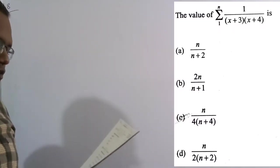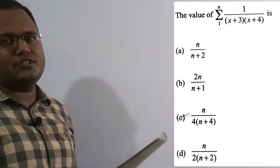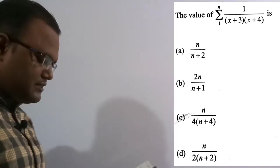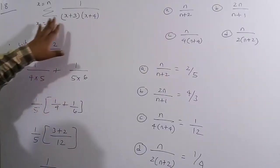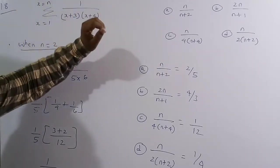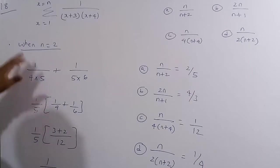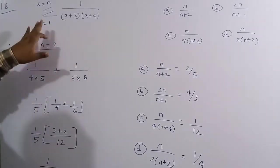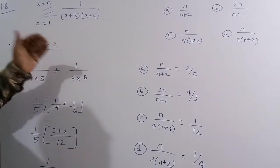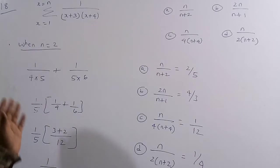Now solving the 18th question: find the value of Σ(x=1 to n) 1/[(x+3)(x+4)]. Option C is the correct solution. To determine the answer, substitute the first two terms (x = 1 and x = 2) and check which option matches.